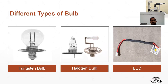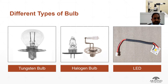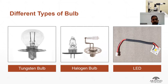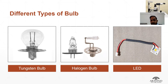Now let's see the different types of bulbs used in the slit lamp. There are basically three types: the tungsten bulb, the halogen bulb, and the LED bulb. The tungsten bulb produces more heat along with light, and its lifetime is around 1,000 hours. Halogen bulbs are slightly brighter than tungsten bulbs, with a lifetime of around 2,000 hours. LED bulbs, recently introduced in slit lamps, have a lifetime of around 40,000 hours and are much cheaper than other types, which is their major advantage.